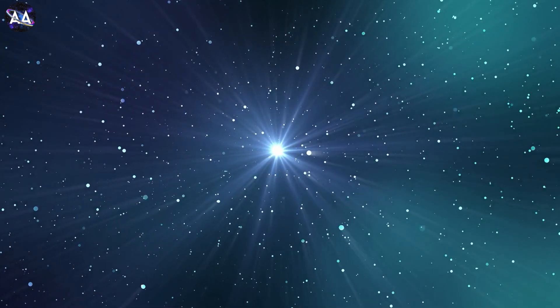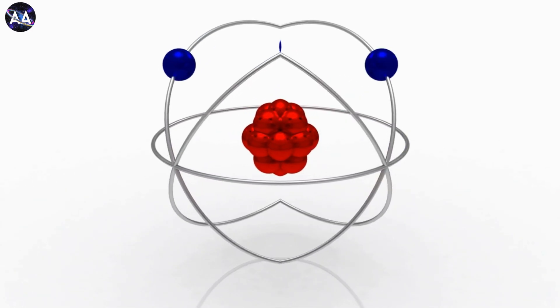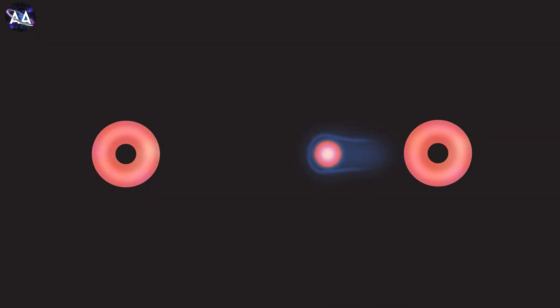Now, here's something cool. Every particle has a twin called an antiparticle. Antiparticles are similar to their corresponding particles, but have opposite charges. For example, the antiparticle of the electron is the positron.